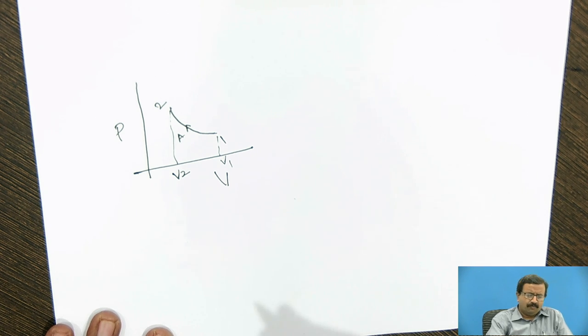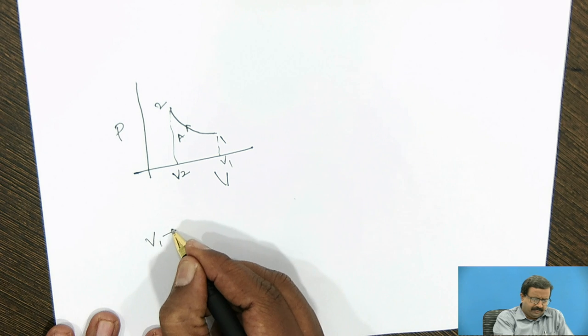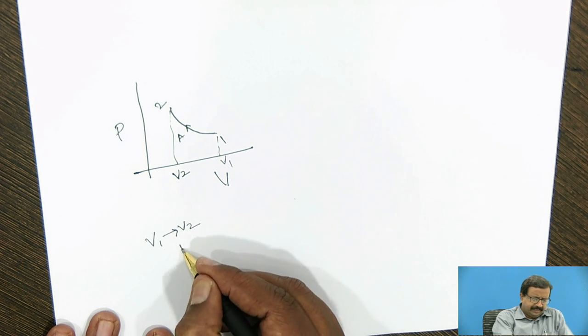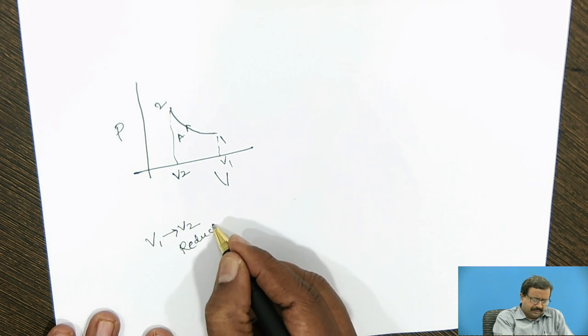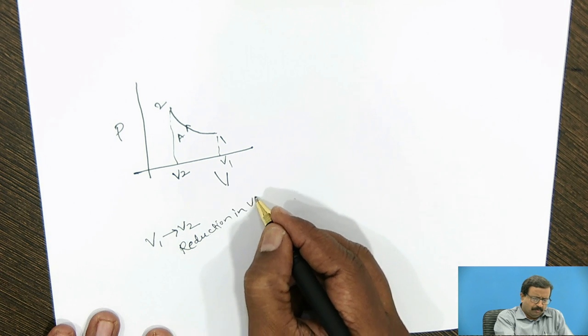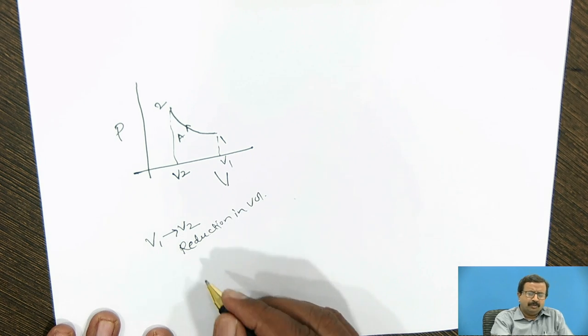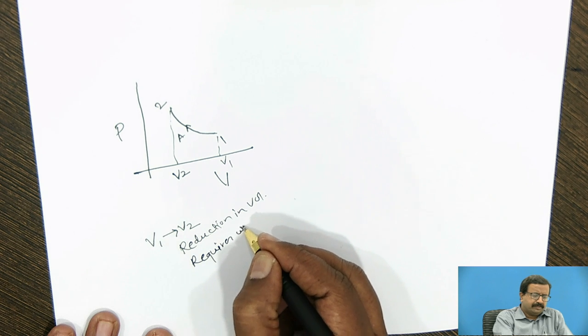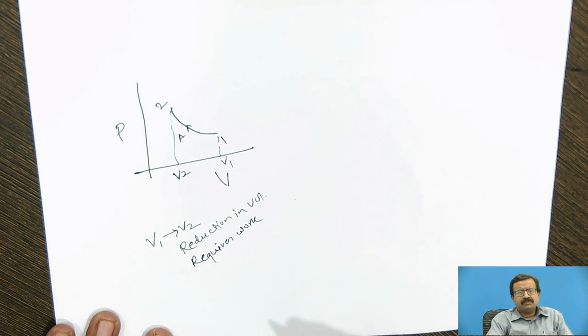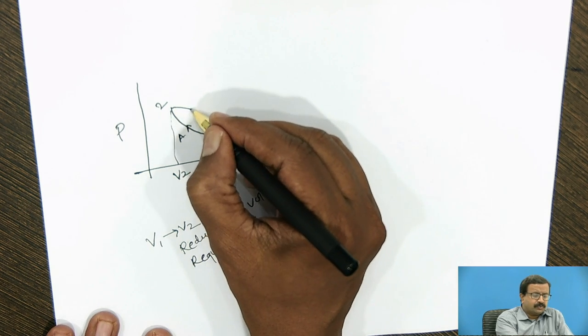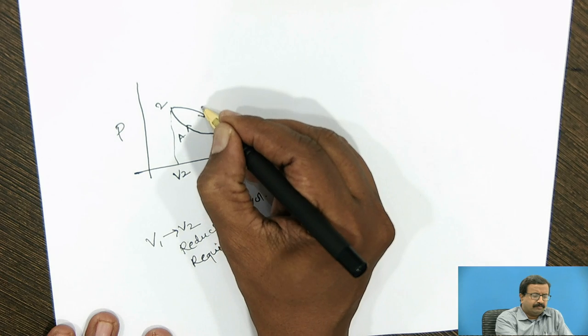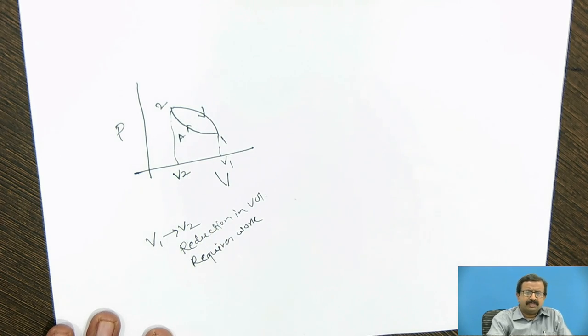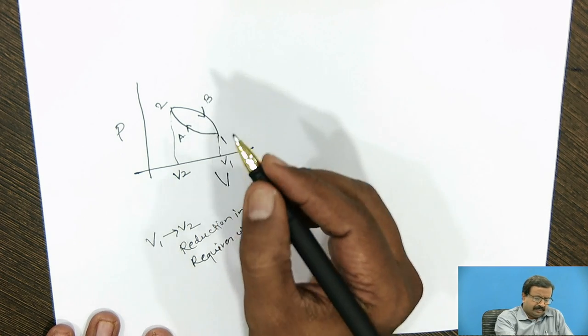We have to spend work. When I go from V1 to V2, there is a reduction in volume, and reduction in volume requires work. This process 1 to 2 will consume work. There is no problem for it.